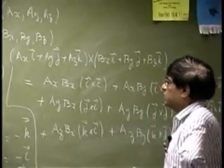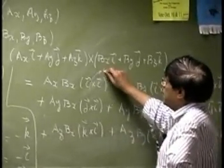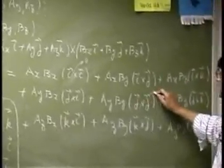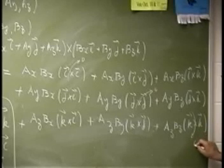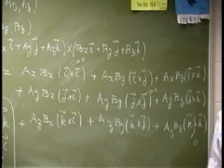Now if you look at each one of them, see i cross i will go to 0, j cross j will go to 0, and same thing happens to k cross k. They all go to 0.